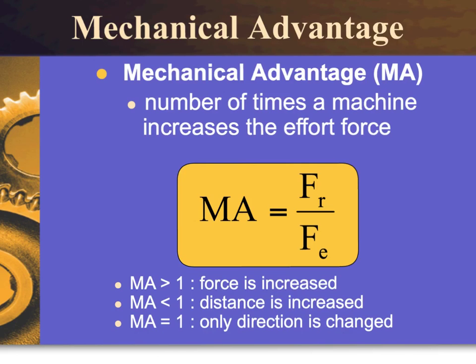If a mechanical advantage is greater than 1, then the force is increased within the machine. If the mechanical advantage is less than 1, then only the distance is increased. A mechanical advantage equal to 1 would only change the direction. Therefore, we can look at mechanical advantage and determine how well a machine is functioning.